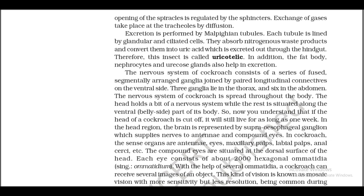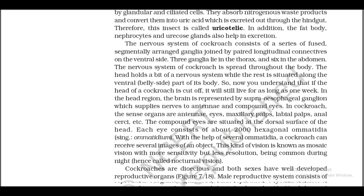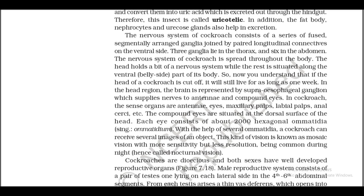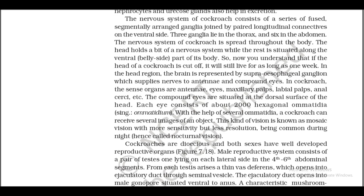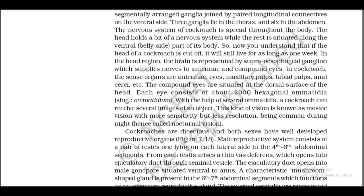Therefore, this insect is called uricotelic. In addition, the fat body, nephrocytes, and urecose glands also help in excretion. The nervous system of cockroach consists of a series of segmentally arranged ganglia joined by paired longitudinal connectives on the ventral side. Three ganglia lie in the thorax and six in the abdomen. The nervous system of the cockroach is spread throughout the body; the head holds only a small part of the nervous system while the rest is situated along the ventral side. So if the head of a cockroach is cut off, it will still live for as long as one week. In the head region, the brain is represented by the supra-oesophageal ganglion, which supplies nerves to antennae and compound eyes.